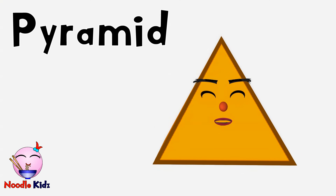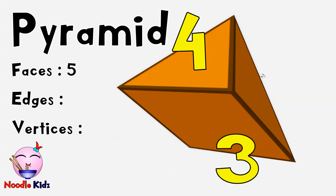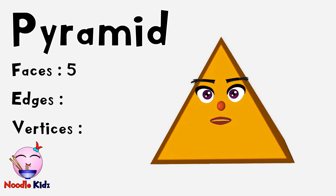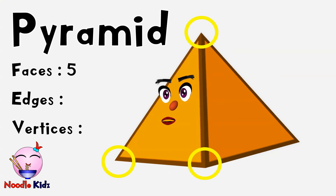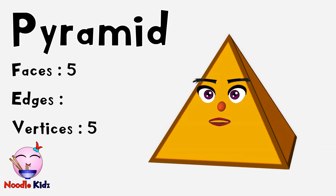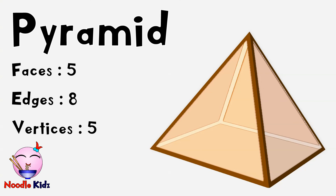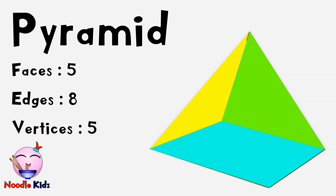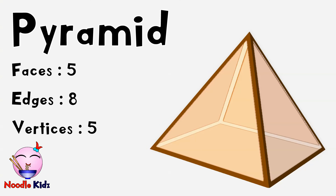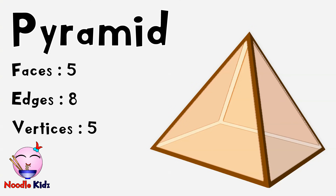Next is me. I am a pyramid. I have one, two, three, four, five faces. I also have one, two, three, four, five vertices. A pyramid has five faces, eight edges, and five vertices.